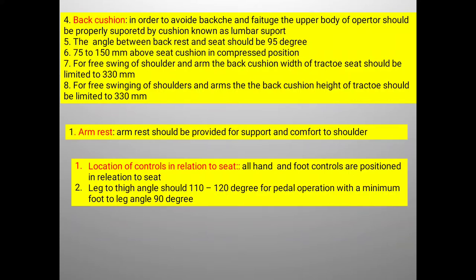The angle between the backrest and seat should be 95 degrees. The lumbar support should be 75 to 150 millimeters above the seat cushion in the compressed position, to allow free swinging of the shoulder and arm during tractor operation. The back cushion width of the tractor seat should be limited to 330 millimeters.